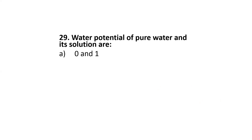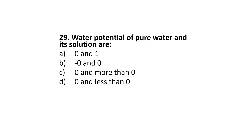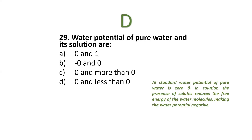Next: water potential of pure water and in solution are — 0 and 1 minus, 0 and 0, 0 and more than 0, or 0 and less than 0? The correct option is D: 0 and less than 0. The water potential of pure water is 0, and in solution the presence of solutes reduces the free energy of water molecules, making the water potential negative.